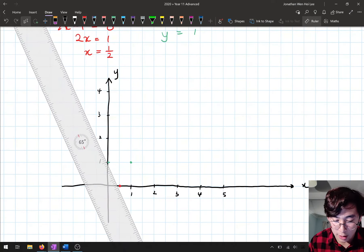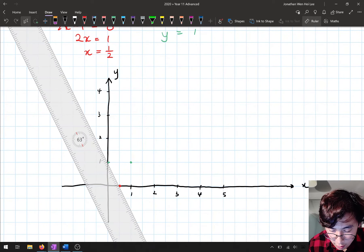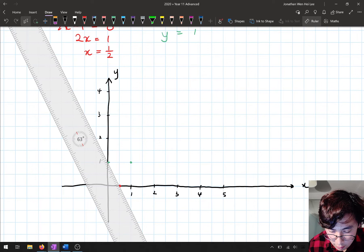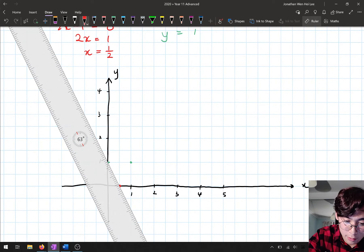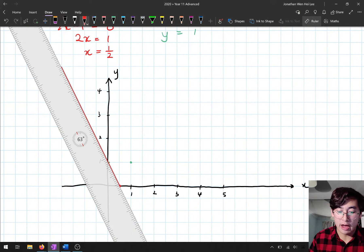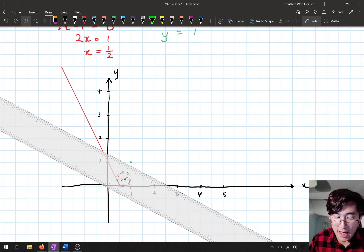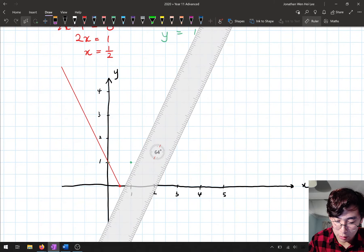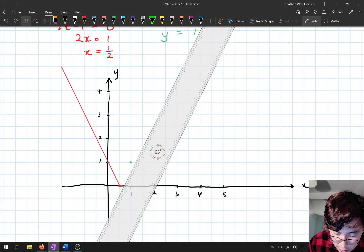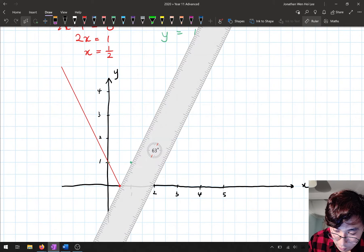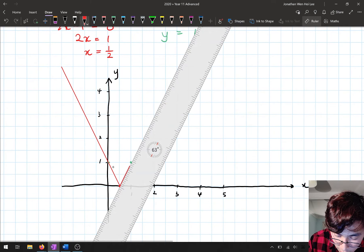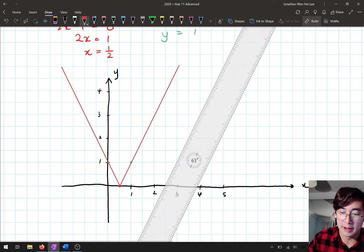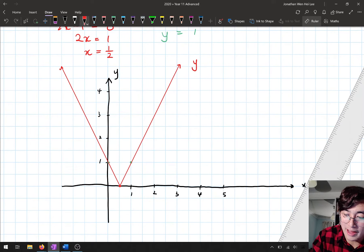I'm going to draw my line. Kind of want to do this accurately. I'm going to just try my best anyway. Here we go. And if I have to say, that's not too bad. And I knew that was 63 degrees. So I could just line this up. So I've got my graph here, y = |2x - 1|.